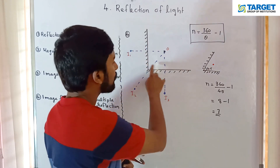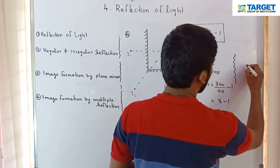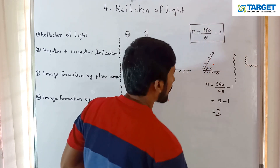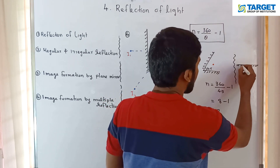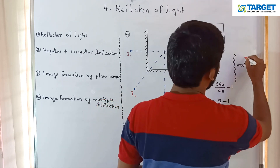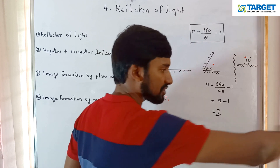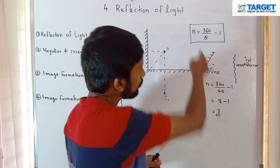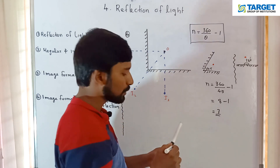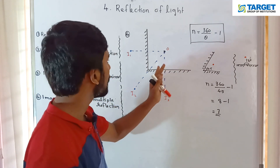If the angle between the mirrors is 180 degrees: n = 360 divided by 180 minus 1 = 2 minus 1 = 1 image. And if the angle is 90 degrees: n = 360 divided by 90 minus 1 = 4 minus 1 = 3 images. So, using the equation n = 360/theta minus 1, we can find the number of images formed for any angle between the two mirrors.